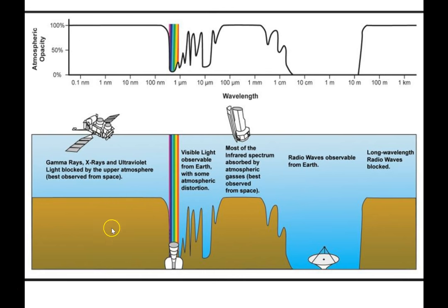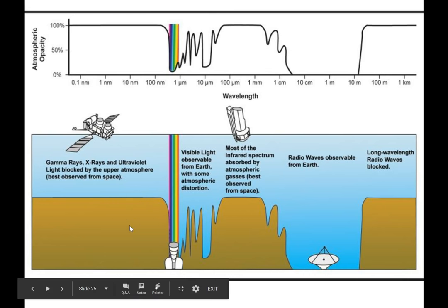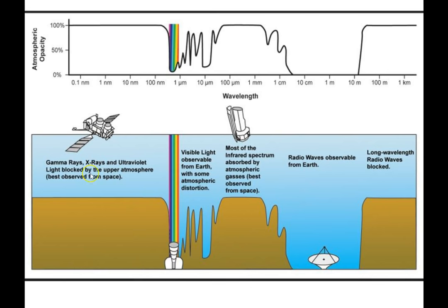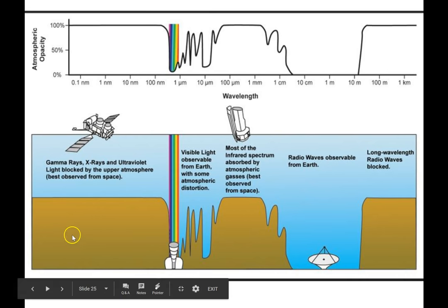You could potentially have photopigments in your eye that make you sensitive to x-rays or even gamma rays. But that wouldn't be an advantage because there aren't enough electromagnetic waves at those wavelengths to bounce off things and give us information about the environment. In other words, there wouldn't be anything to see.